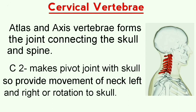C2 makes a pivot joint with the skull, providing movement of the neck left and right, and rotation of the skull. This left and right movement of our neck is made possible due to the axis joint.